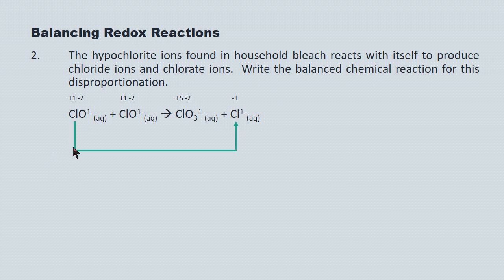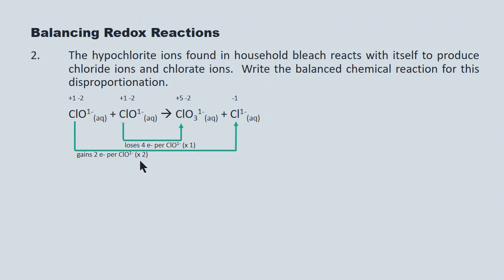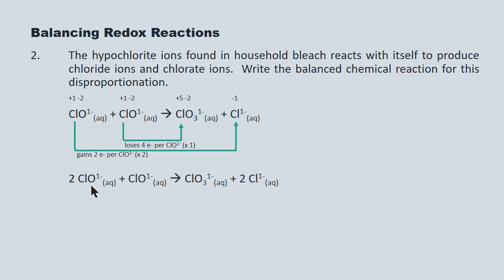In the case of the first hypochlorite ion, we're going from plus one to minus one, gaining two electrons for every hypochlorite ion. For the second hypochlorite ion, we're losing four electrons per ion because we're going from plus one to plus five. We balance the electrons gained in one half-reaction by the electrons lost in the other by using multipliers: two in front of the first ion and one in front of the second. Two hypochlorite ions react with another hypochlorite ion to give the chlorate ion and the chloride ion. Putting a two in front of the chloride ion balances the chlorines, and we have three oxygens going in and three coming out, so the equation is balanced.